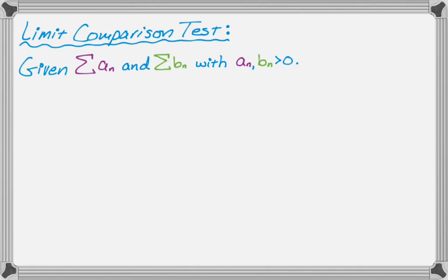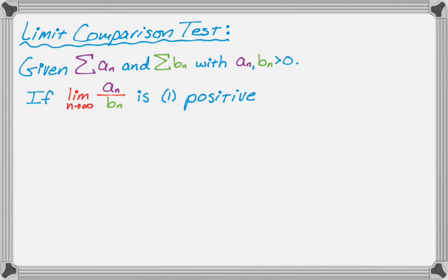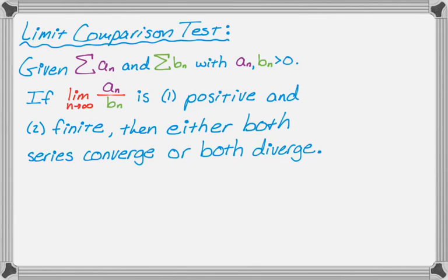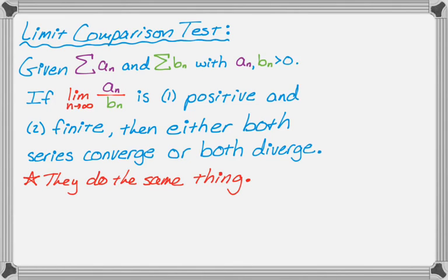If the limit as n approaches infinity of a_n over b_n — it doesn't matter, it could be b_n over a_n — but if the limit of one over the other is positive and finite, then either both series converge or both series diverge. The key thing is that if you take that limit and get a positive finite value, they both do the same thing.